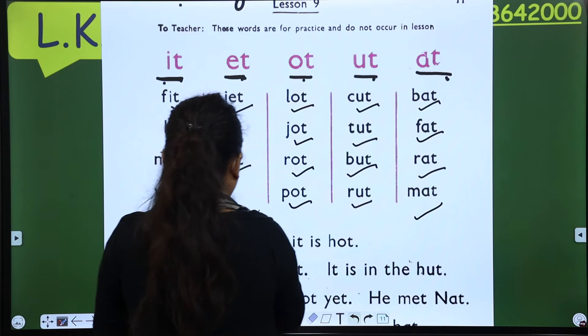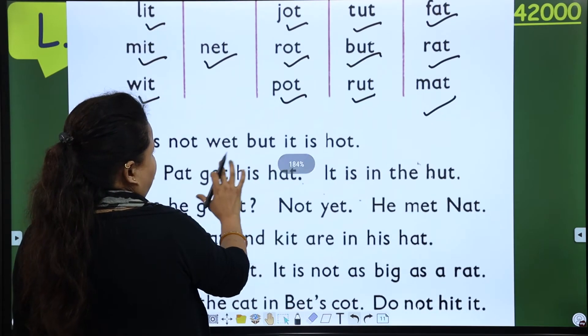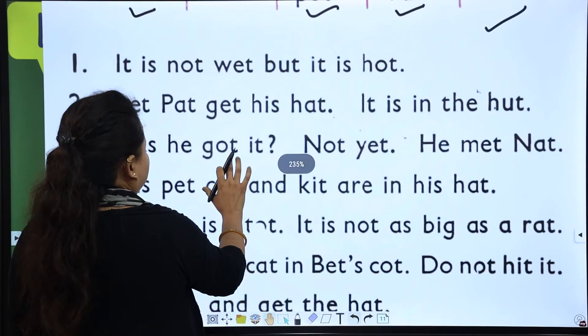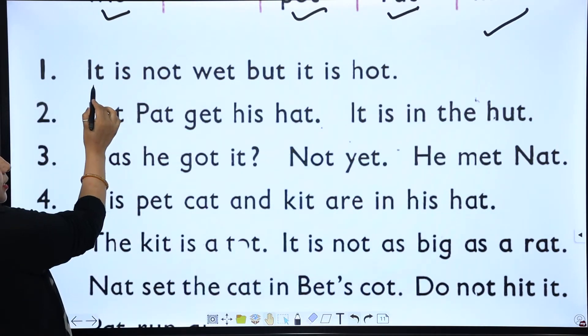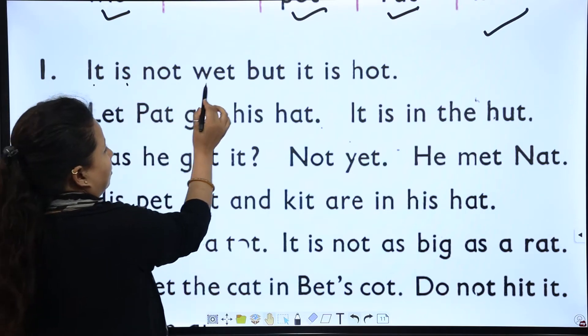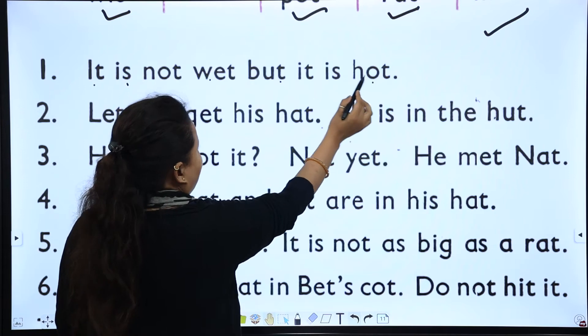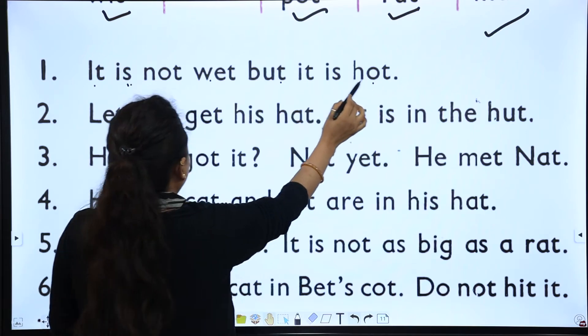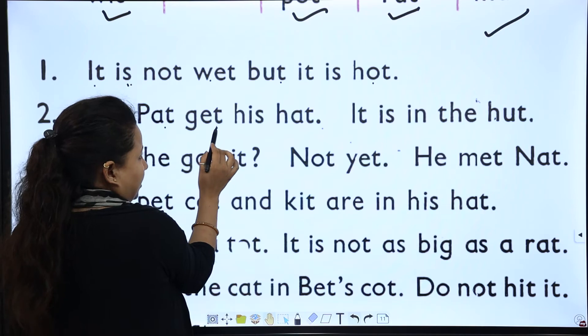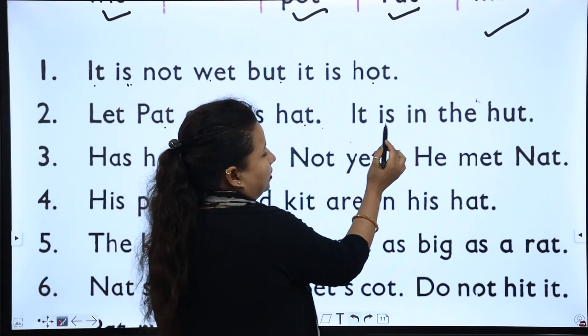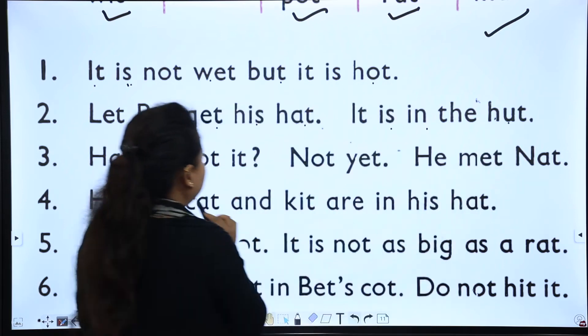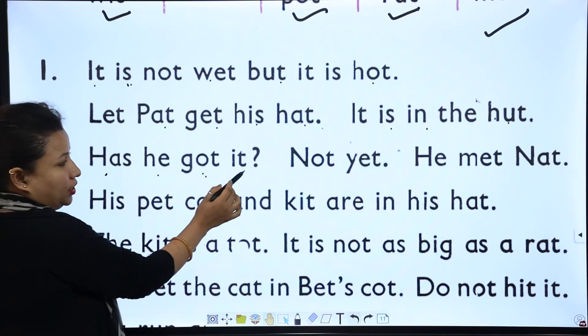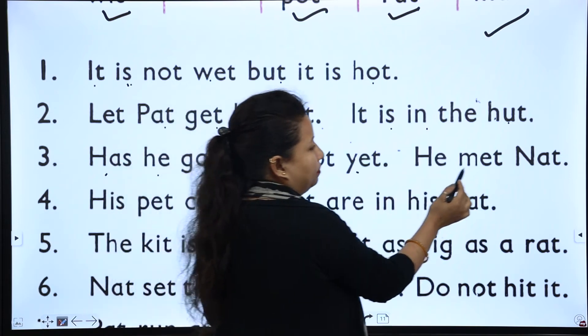Now we start to read the sentences. Look. It is not wet, but it is hot. It is not wet, but it is hot. Let Pat get his hat. It is in the hut. Has he got it? Has he got it? Not yet. He met Nat.